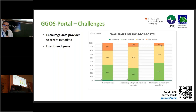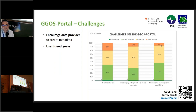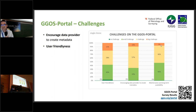One challenge is encouraging data providers to create the metadata and DOIs so we can integrate them. We think about launching the JIGOS portal with a few but good data and products, which can encourage other data providers to do the same. Of course, we also want to help and support data providers to do it in the right way.